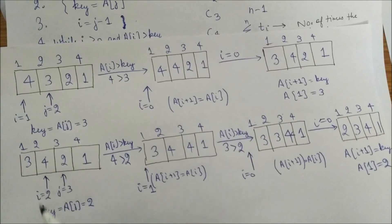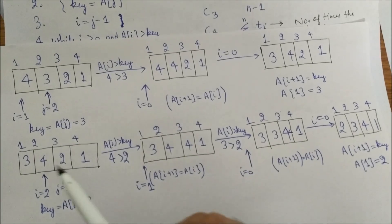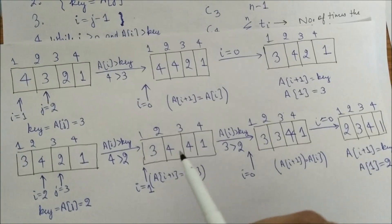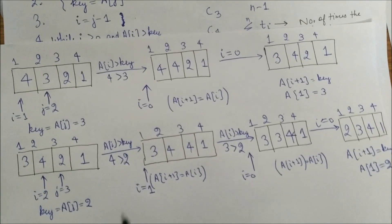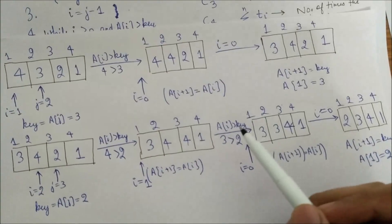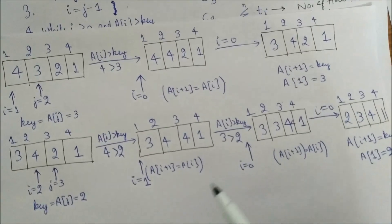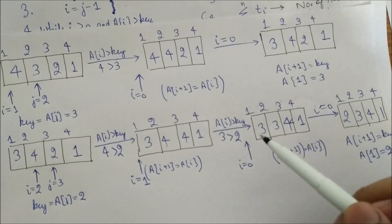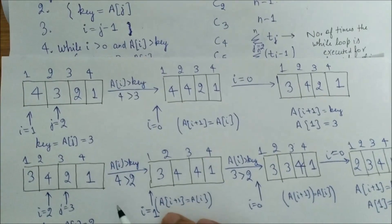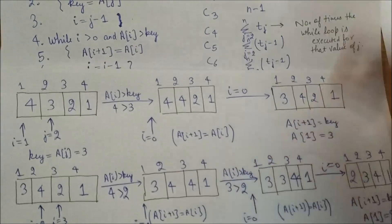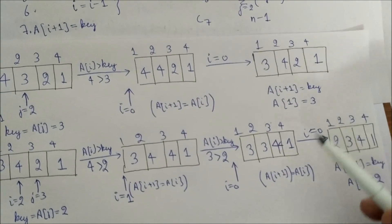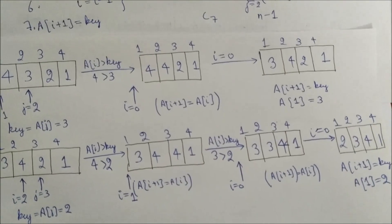When j=3, key = 2. We compare a[i] > key: yes, so we shift and decrement i. We compare again: 3 > 2, so we shift and decrement i again. Now i=0, the while loop condition fails, we exit and assign a[i+1] = key = 2. The while loop executed 3 times when j=3.